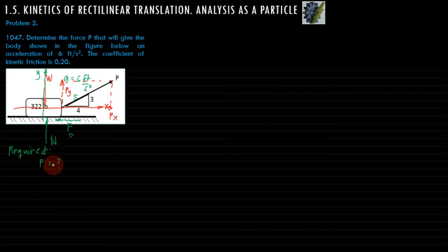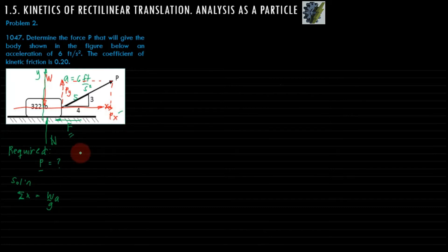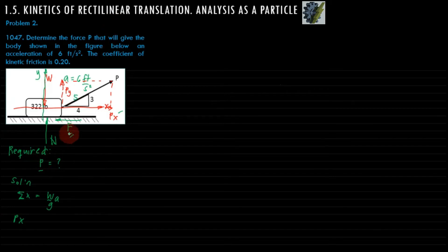Using Newton's second law, summation of forces in the x-direction equals W over g times a. The positive force in the x-direction is Px, and the negative force is the friction force F.